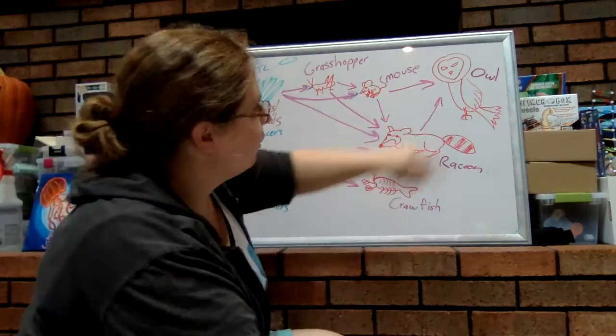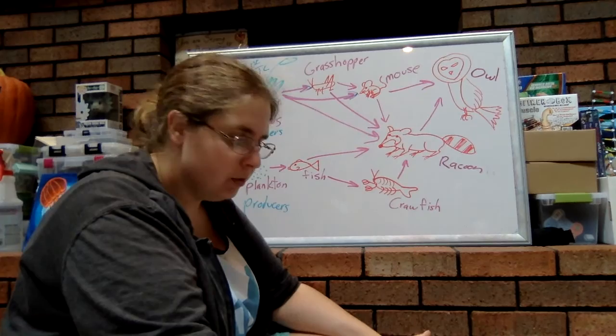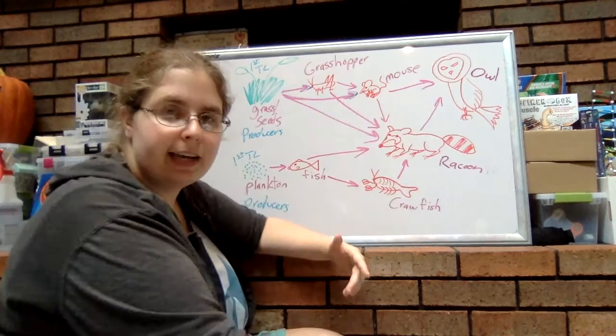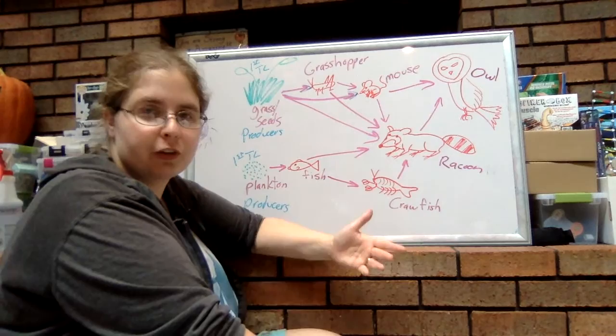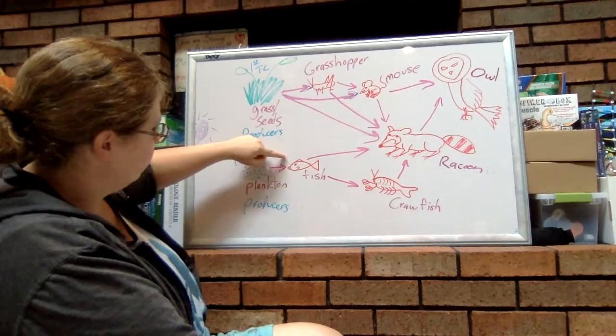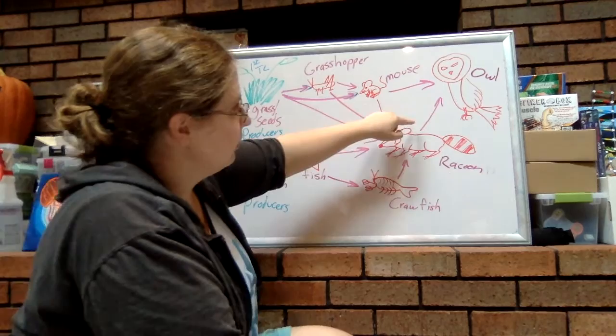Notice how depending on which food chain within this food web you're looking at, that will also affect how we label consumers — whether they're a primary, secondary, or tertiary consumer. The producers are always first. Following a chain: producer, primary consumer, secondary consumer, tertiary consumer, quaternary consumer.